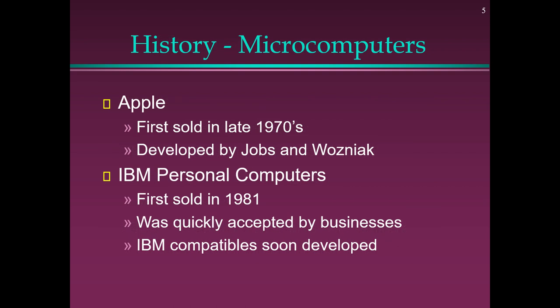The History of Microcomputers: Apple was first sold in the late 1970s, developed by Jobs and Wozniak. IBM Personal Computers were first sold in 1981 and were quickly accepted by businesses. IBM Compatible computers were soon developed.